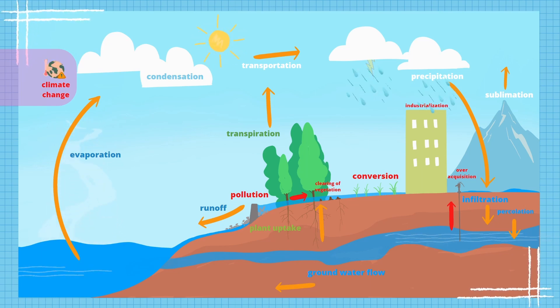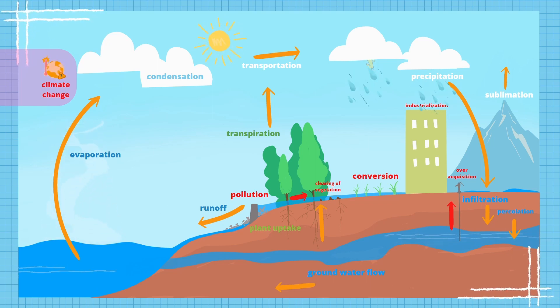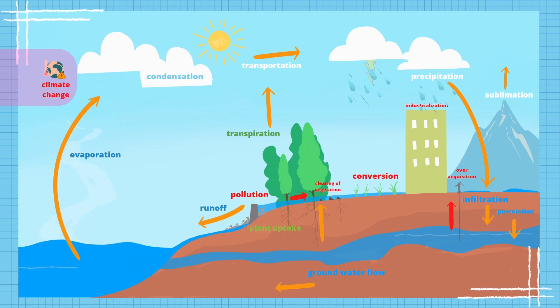Due to global warming, evaporation levels increase, resulting in drier weather conditions and stronger precipitation afterwards. Deforestation, on the other hand, decreases transpiration and leaves the soil vulnerable to erosion and degradation.